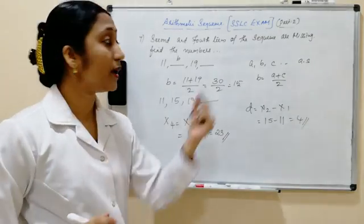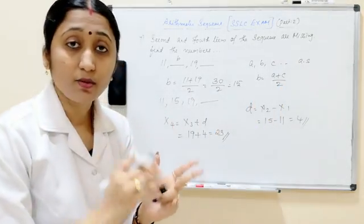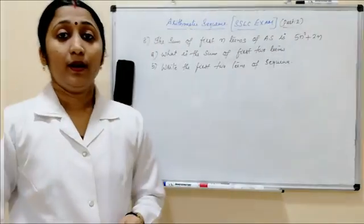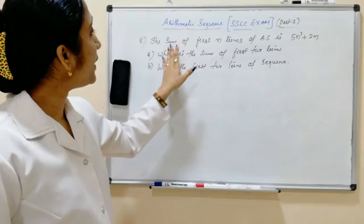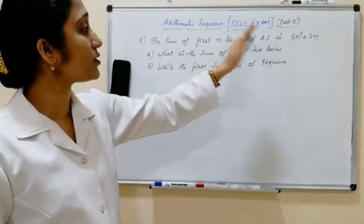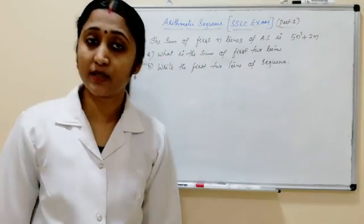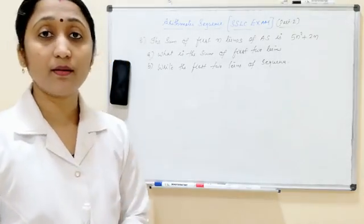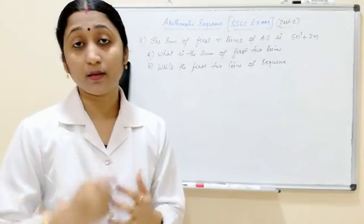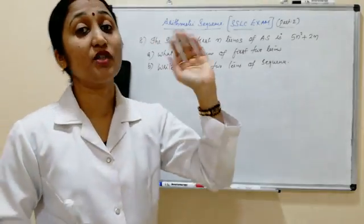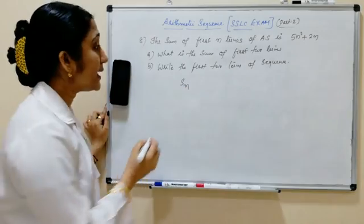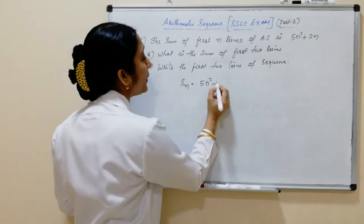Very easy. In an arithmetic sequence, if A, B, C are in arithmetic sequence, then B equals A plus C by 2. Next is the 8th question: the sum of the first n terms of an arithmetic sequence is 5n² plus 2n. What is the sum of the first two terms? Write the first two terms of the sequence.